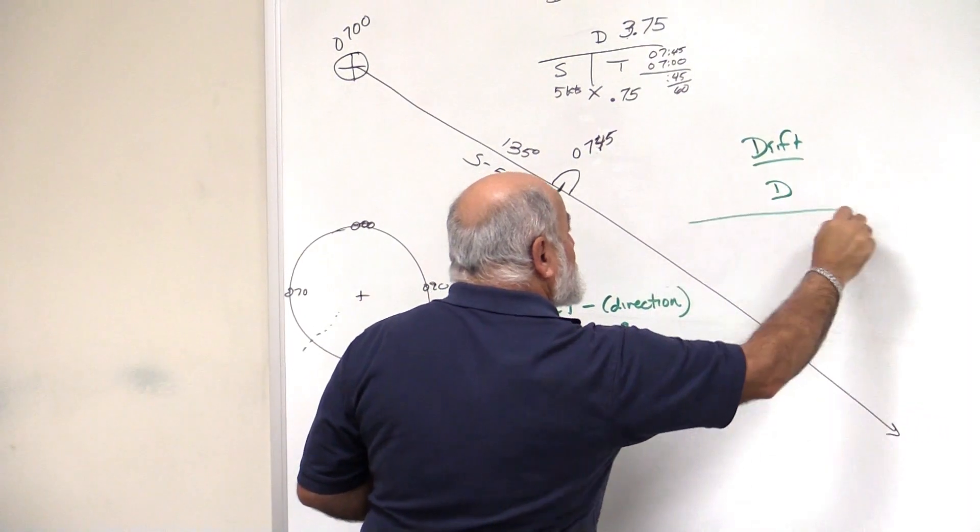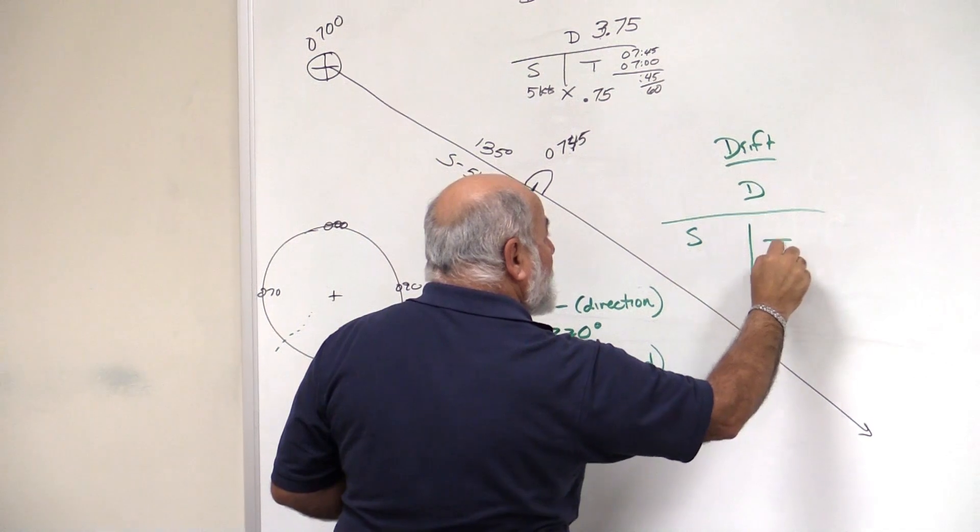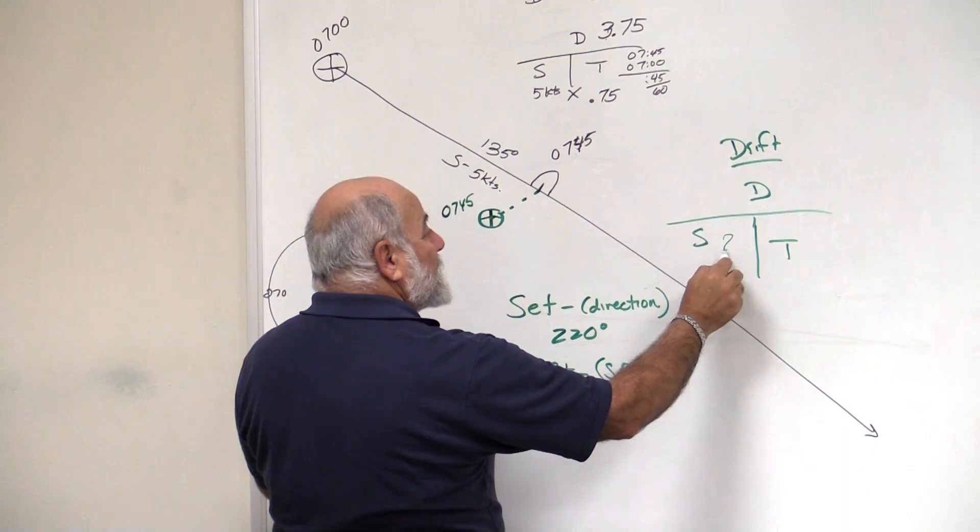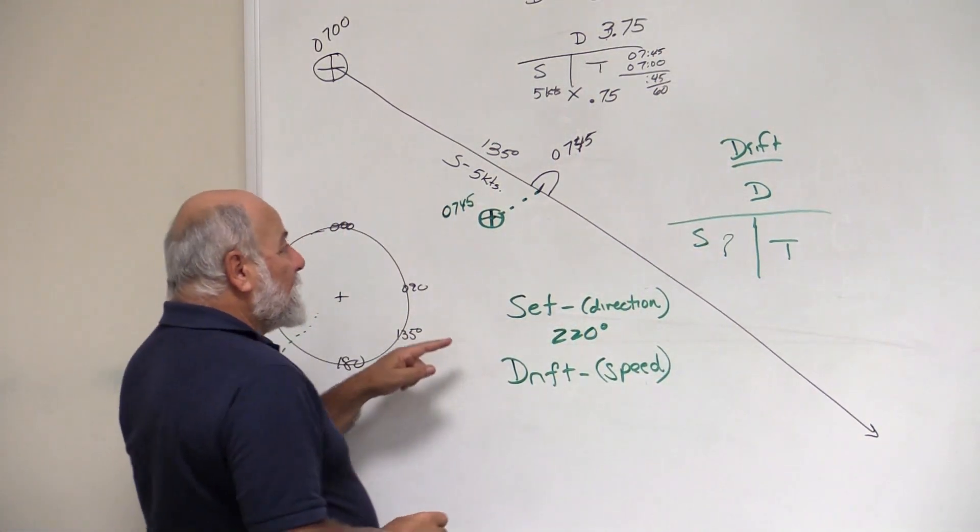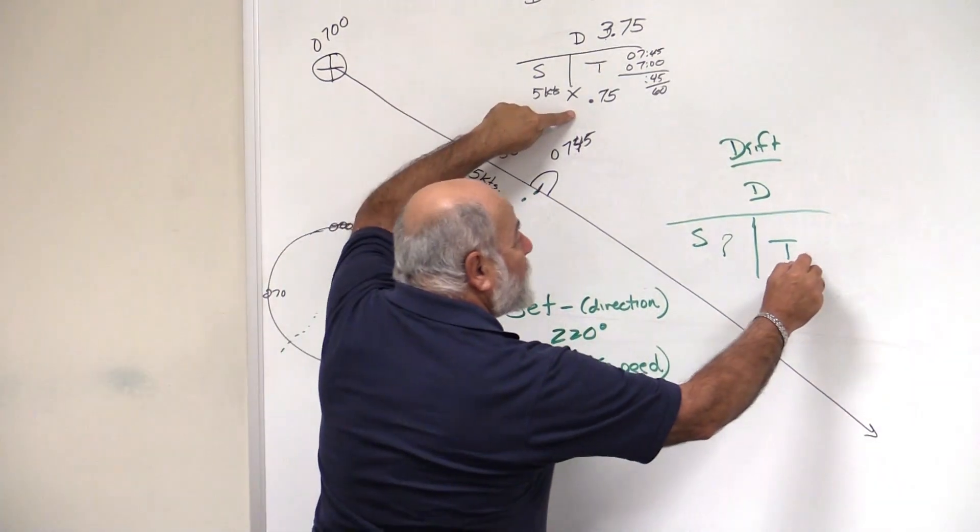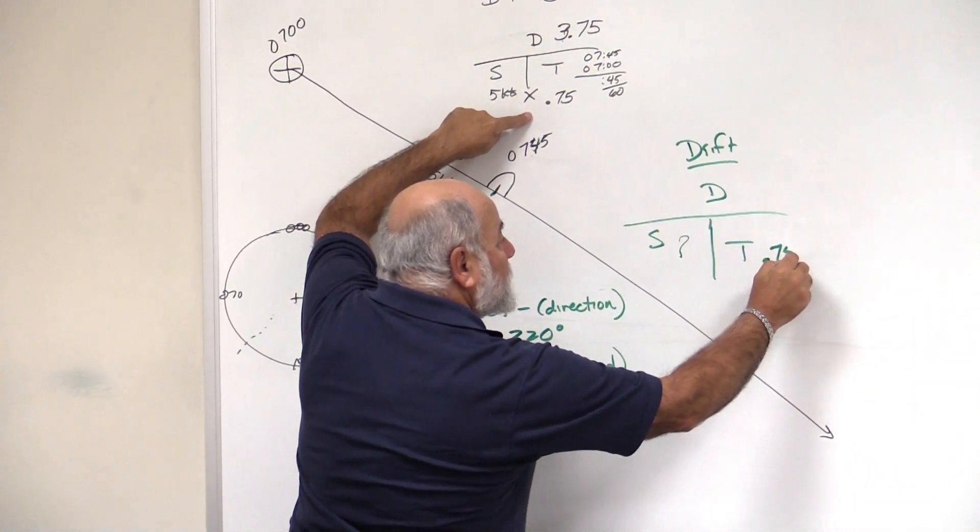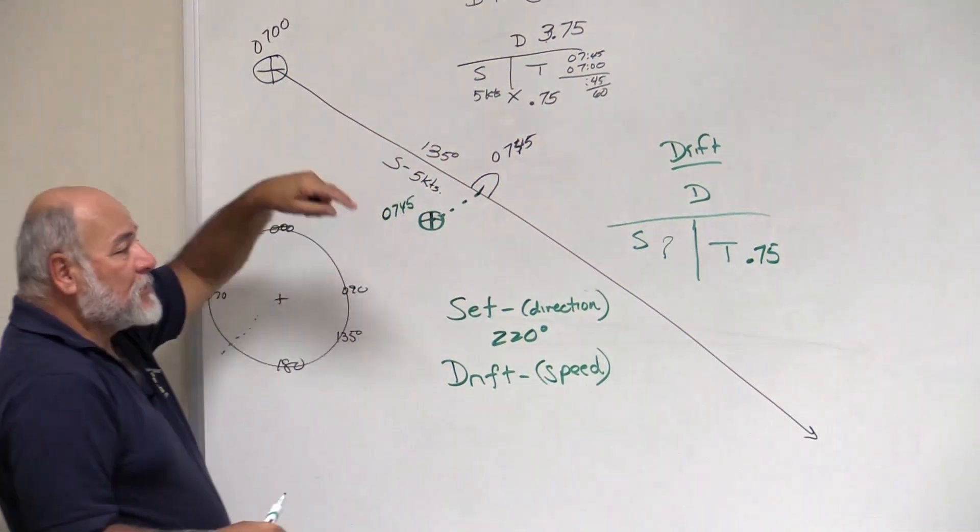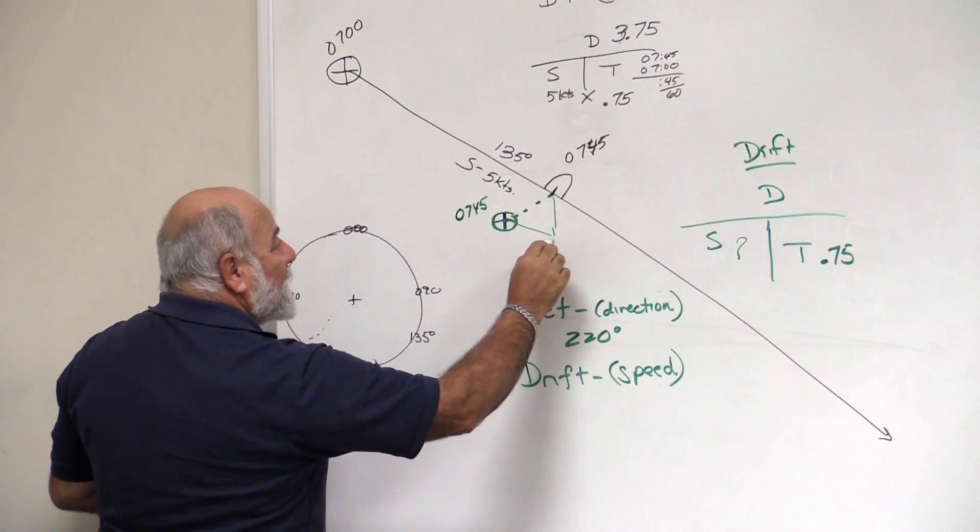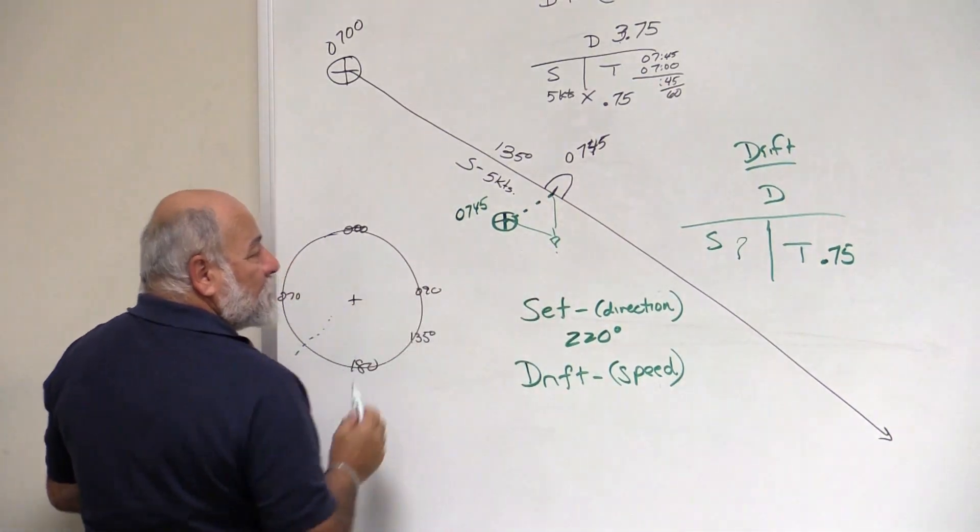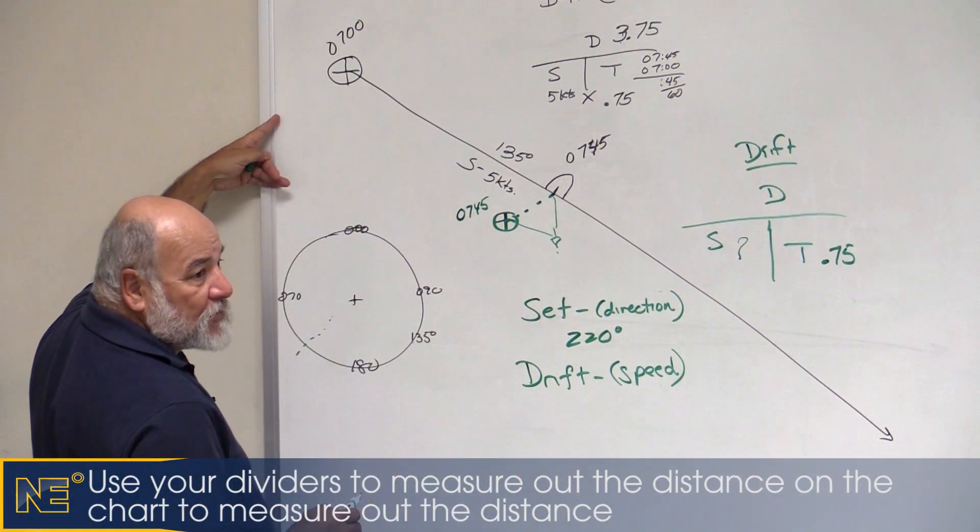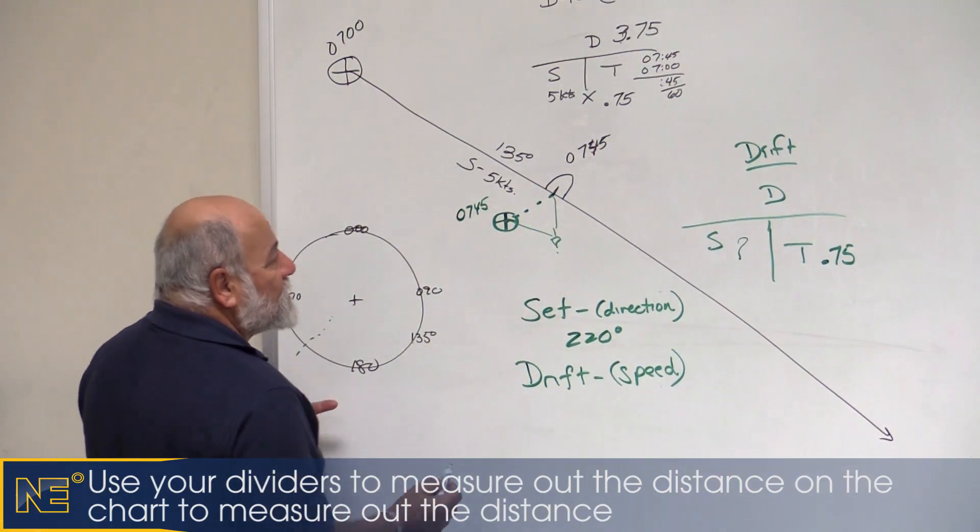Distance, speed, and time. What are we looking for? We're looking for speed. That's our unknown. What's our time? The time hasn't changed. It's 0.75, three quarters of an hour. What's our distance? The distance is from here to here. How far did we get set off? That's our distance.